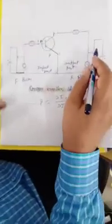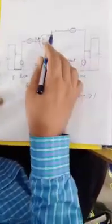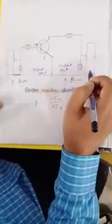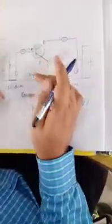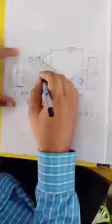The collector-base junction is reverse biased. The P-type collector is connected to the negative terminal of the battery and the emitter is connected to the positive terminal. In this way, the emitter-base junction is forward biased and the collector-base junction is reverse biased.